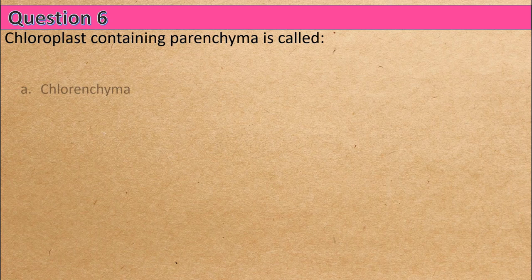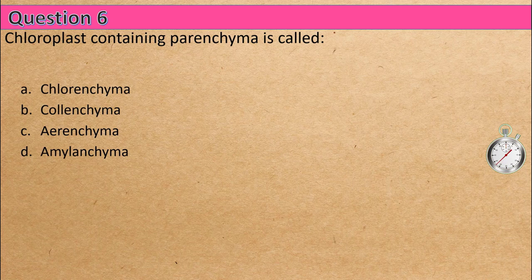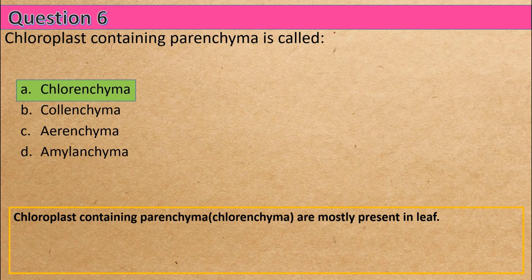Question 6: Chloroplast-containing parenchyma is called — Option A: chlorenchyma, Option B: colenchyma, Option C: aerenchyma, Option D: amylenchyma. The correct answer is Option A: chlorenchyma.